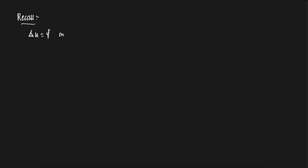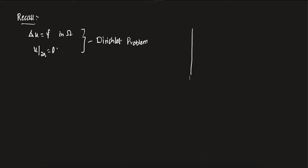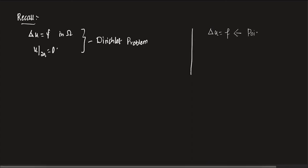Laplacian of U equals to F in omega, and U restricted to the boundary is 0. This is called the Dirichlet problem. This equation — Laplacian of U equals to F — is called the Poisson equation.